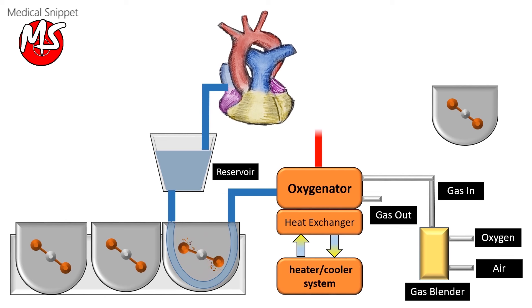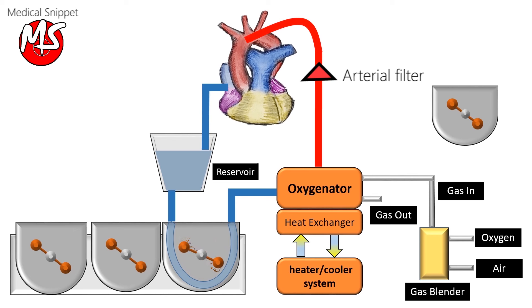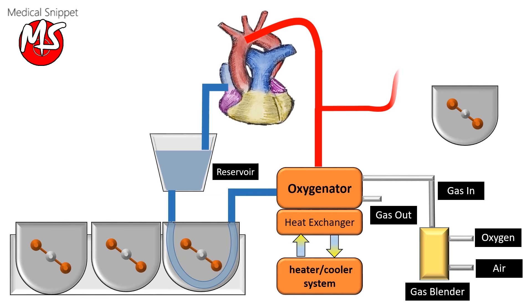The oxygenated blood is then pumped into the ascending aorta through the aortic cannula. Sometimes an arterial filter is connected in the circuit. A part of the oxygenated blood is diverted to prepare cardioplegia.